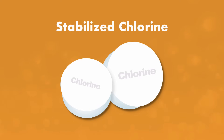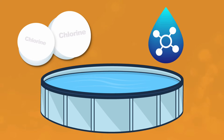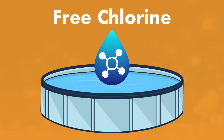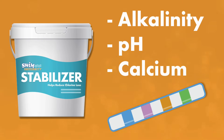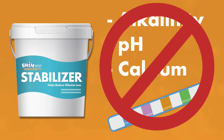Cyanuric acid allows your pool water molecules to hold on to the chlorine, specifically free chlorine. Free chlorine is the amount of sanitizer that's available to clean your pool water. The other good thing about cyanuric acid is that it has little effect on alkalinity, pH, and calcium hardness levels. Its one job is affecting chlorine.